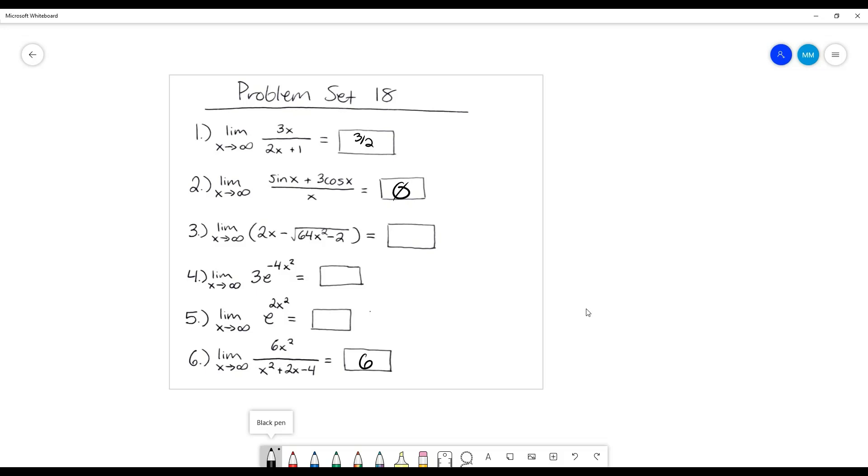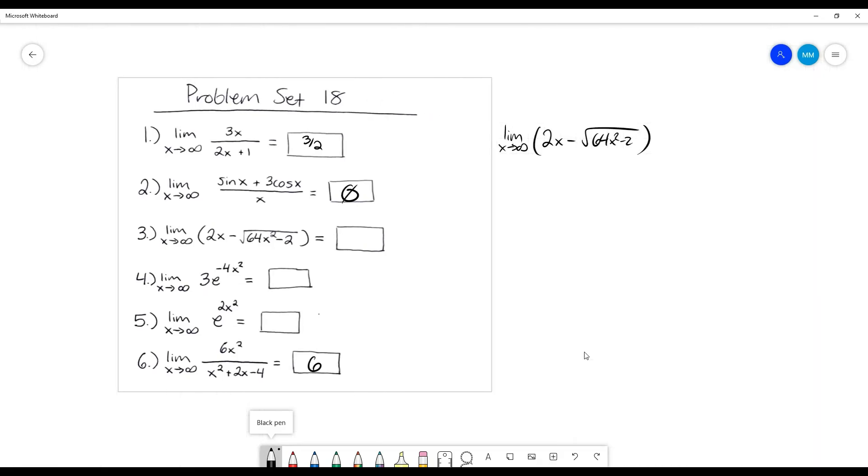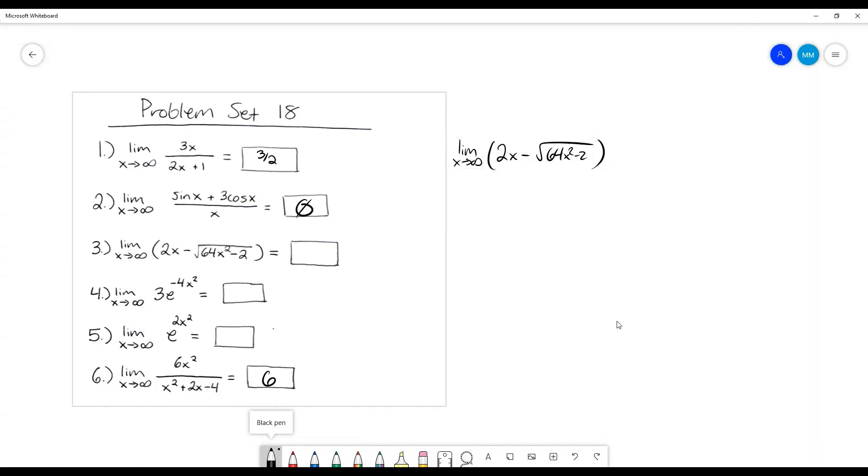So, this time we have the limit as x approaches infinity of 2x minus this square root here. And what we need to do... I know in the homework it suggests that you, like, quote-unquote rationalize the numerator. And that's technically what's happening. We're going to multiply top and bottom of this pretend fraction by the conjugate. And if you don't remember what a conjugate is, it's when you have a thing like this, and you just swap the sign.